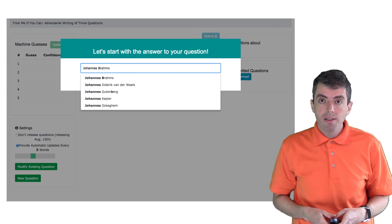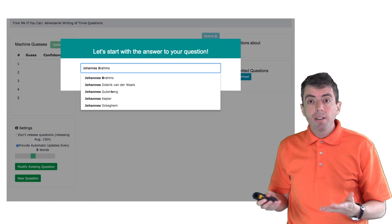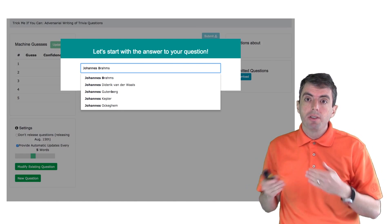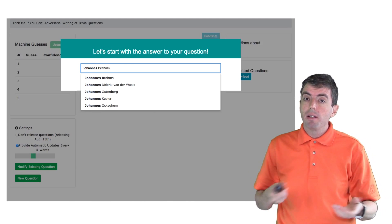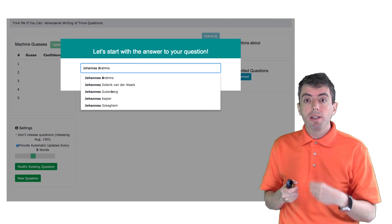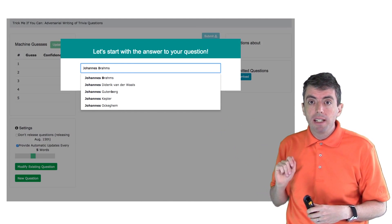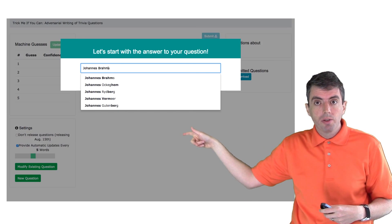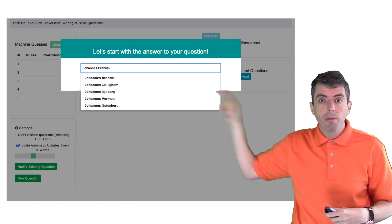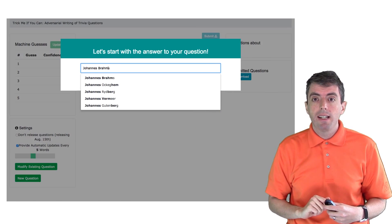So here I've gone to our web page, and I've started typing in the answer to the question that I want to write. So this is the usual way that you think about a question. You think about what am I going to write a question about, and then you can start typing it in here. So hopefully, once you start typing your answer, you should be able to see it in the scroll down menu, and you can select the one that you want to use, click on it, and hit enter.